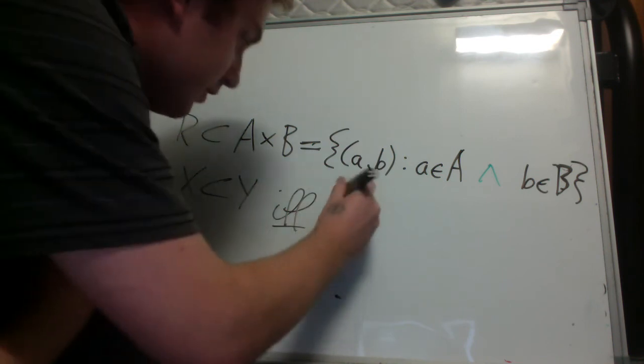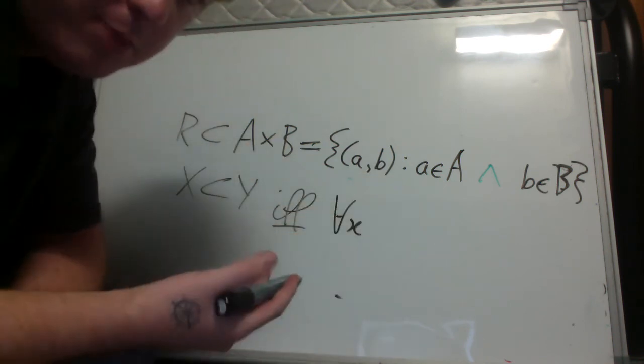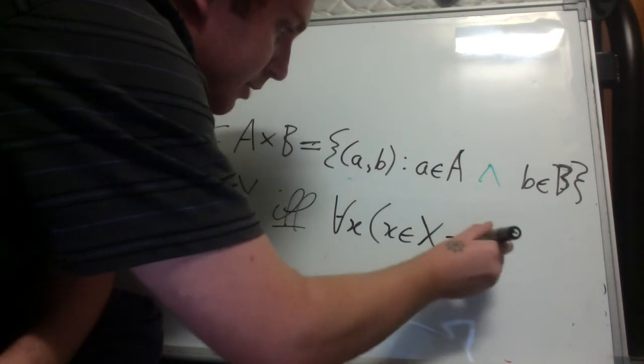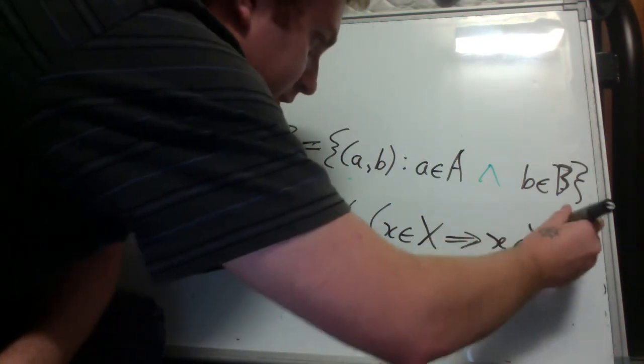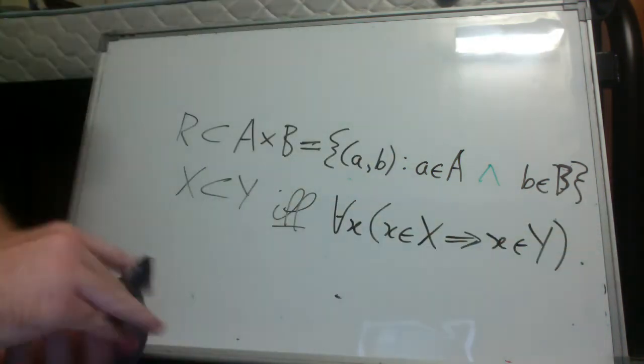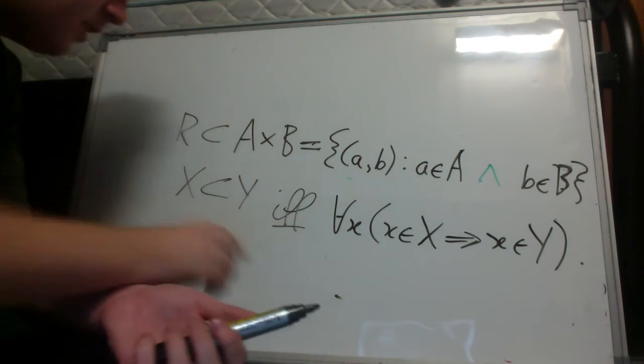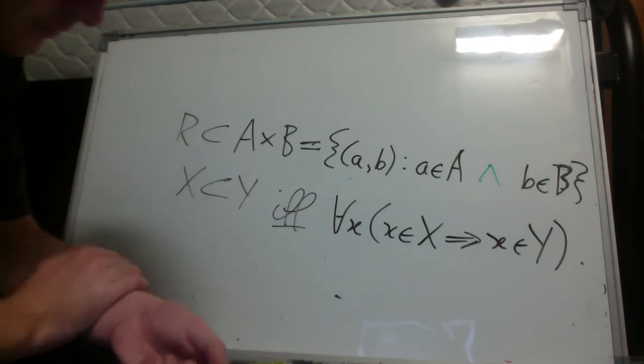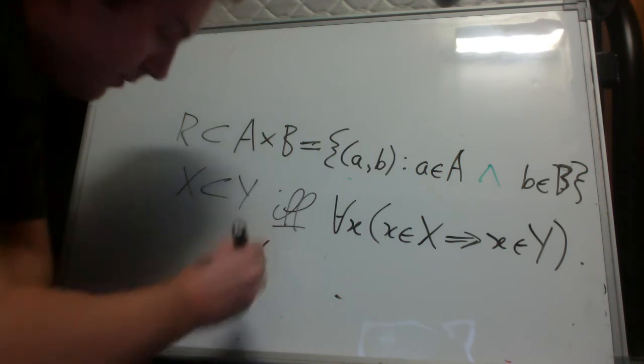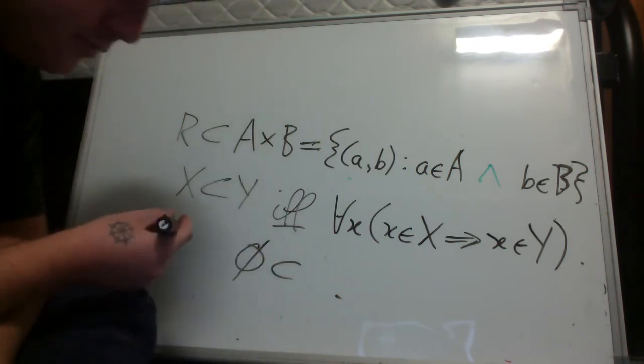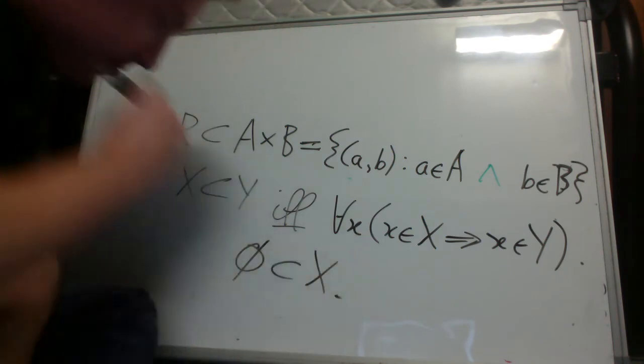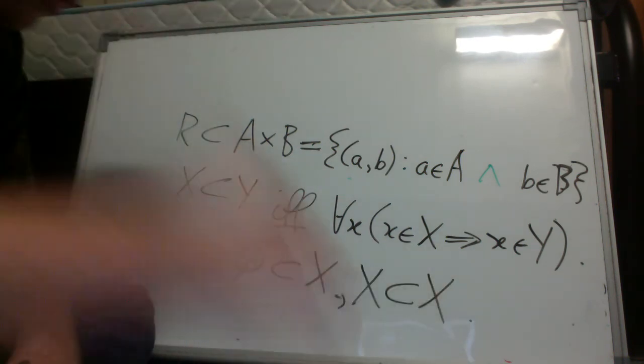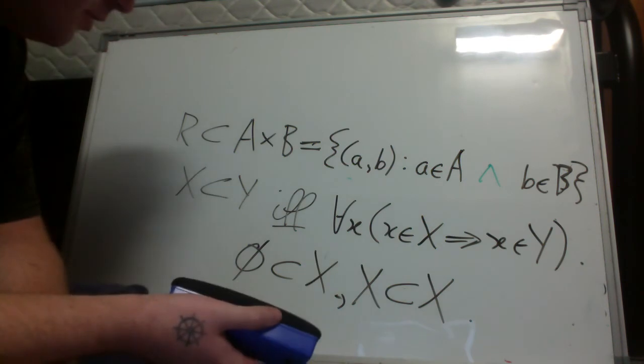So this means for all x within some implicit set, x element big x implies x element y. So essentially what it's saying is that if x is a subset of y, every element of x is an element of y. So note that the empty set is a subset of every set, and every set is a subset of itself. Those properties can be useful.